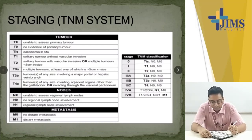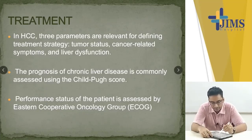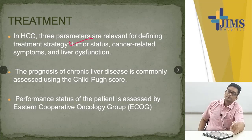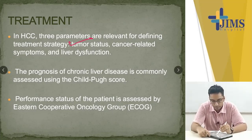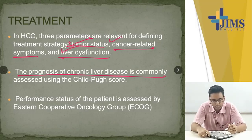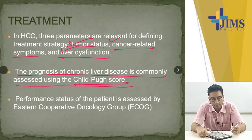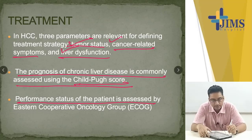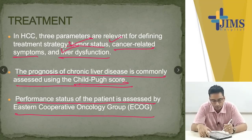For staging, you don't need to remember the details — just go through it once. Treatment parameters needed include tumor status, cancer-related symptoms, and liver dysfunction. The prognosis of chronic liver disease is assessed by the Child-Turcotte-Pugh score. Performance status of the patient is assessed by the ECOG — Eastern Cooperative Oncology Group.